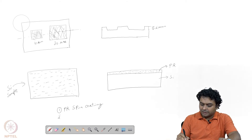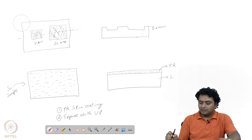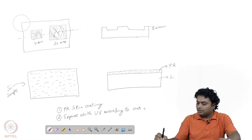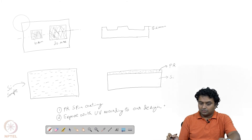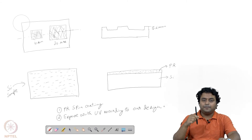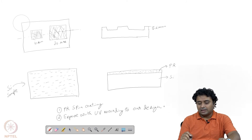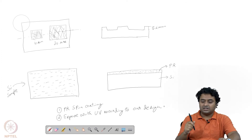The next step is to expose with UV light according to our design. As I am saying, this will be like direct writing. Direct writing means I will be writing just like a pen — this pen will move according to our required design. The coordinates and all the information will be given to the laser writer or whatever system we are using, and then it will move the laser beam according to our required design.